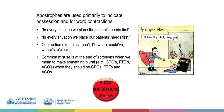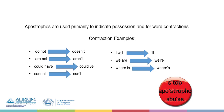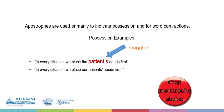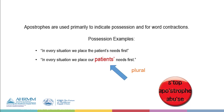Apostrophes are used primarily to indicate possession and for word contractions. Contractions are where you take two words and put them into one — 'do not' becomes 'doesn't,' 'are not' becomes 'aren't,' 'could have' becomes 'could've.' We use an apostrophe to indicate the letters that have been taken out. We also use the apostrophe to indicate possession — 'the man's item,' M-A-N apostrophe S. The apostrophe before the S indicates singular; the apostrophe after the S indicates plural. So 'participant apostrophe S' indicates a single participant.